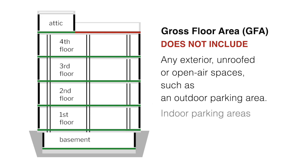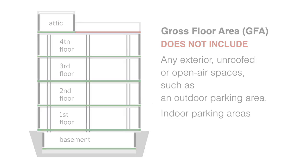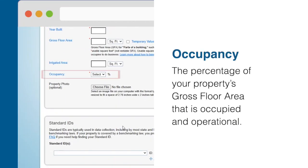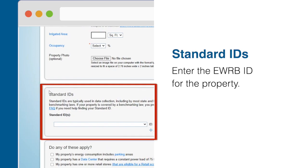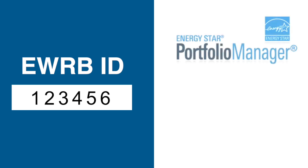You should also not include indoor parking areas in the GFA for your building. Occupancy is the percentage of your property's gross floor area that is occupied and operational. The Standard IDs section is where you enter the EWRB ID for the property. Adding an EWRB ID to your property's profile will allow you to report the property's EWRB data to the Ministry of Energy.